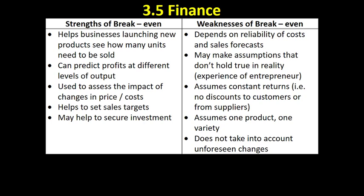If a case study at the end of an exam indicates the person isn't particularly competent with finances, this would be something to mention when analysing the break-even forecast. Break-even assumes constant returns — it assumes variable costs per unit will be the same whether you produce 1,000 or 10,000 units, but often you can negotiate cheaper raw material costs at higher volumes. Fixed costs, while called fixed, can also change after a year or so.